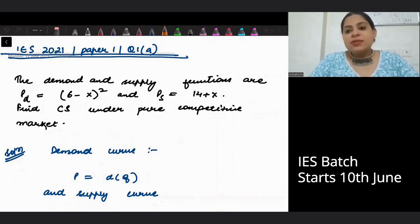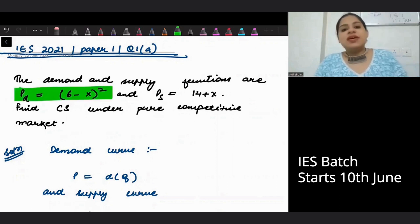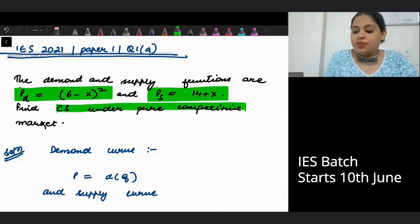The demand and supply functions are given to you. The demand function is 6 minus x whole square and the supply function is 14 plus x. You have to find consumer surplus under pure competitive market.